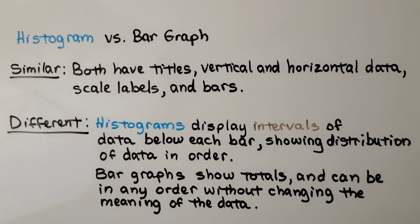Now one common error is that people confuse a histogram and a bar graph. So to compare them, they're similar because they both have titles, vertical and horizontal data, scale labels and bars. But they're different because histograms display intervals of data below each bar showing distribution of data in order. Bar graphs show totals and can be in any order without changing the meaning of the data.